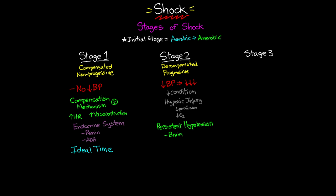The affected systems include the brain, heart, kidneys, gut, liver, lungs, and blood vessels. In the brain, decreased cerebral perfusion pressure leads to confusion, lethargy, and altered mental status. In the heart, muscle cell death leads to acute MI and dysrhythmias. In the kidneys, acute tubular necrosis develops which leads to renal failure.